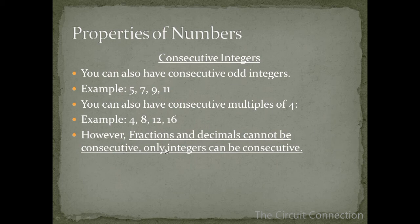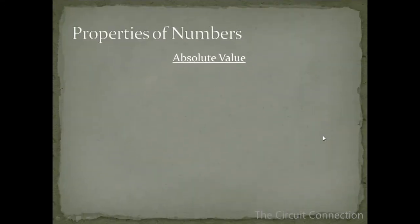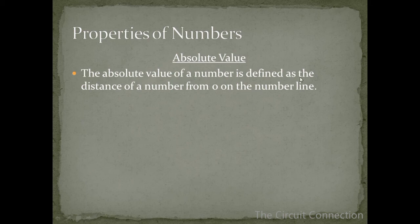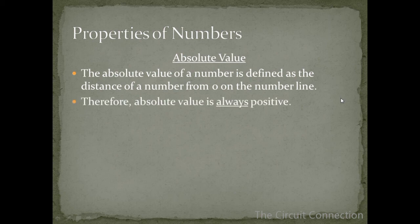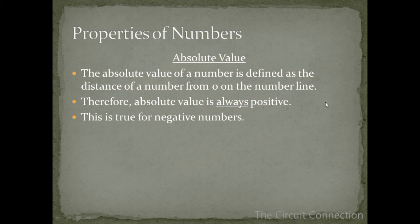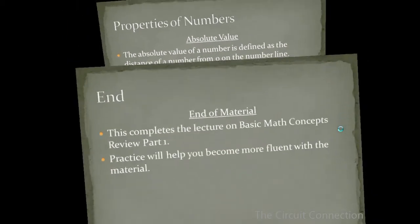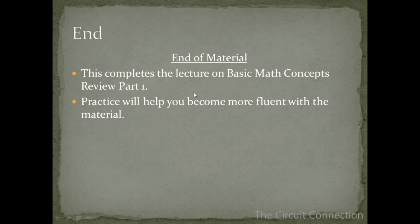Absolute value. The absolute value of a number is defined as the distance of a number from 0 on the number line. So therefore absolute value is always positive. This is true for negative numbers. For example, the absolute value of negative 2 is 2. So if we had an algebraic expression inside of these absolute value bars and it resulted in negative 2, then it would have an absolute value of 2 which is defined as the distance of that number from 0 on the number line.